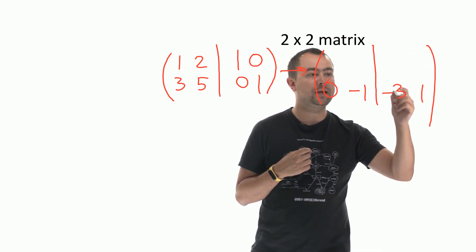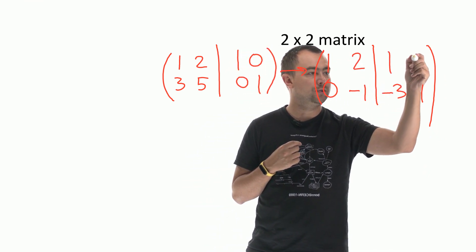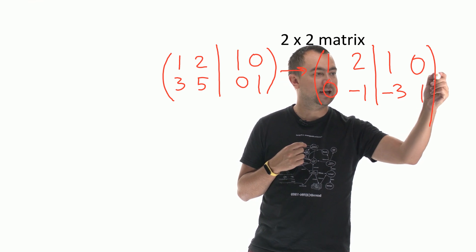And then we just copy the first row: 1, 2, 1, 0. Okay, perfect.